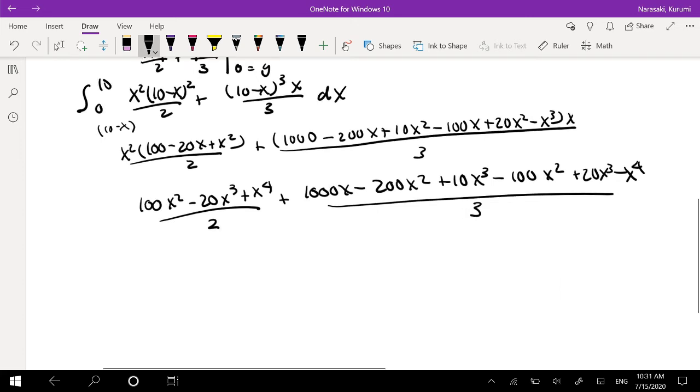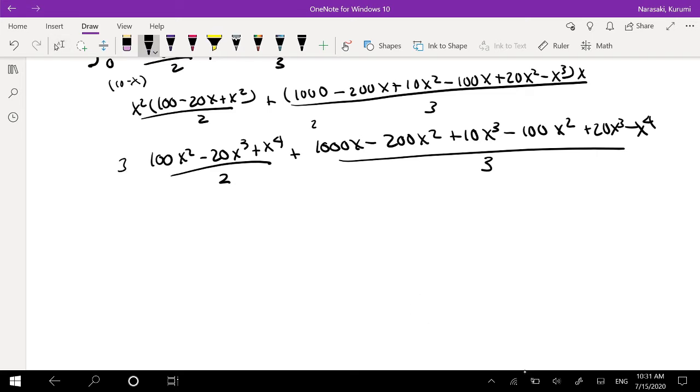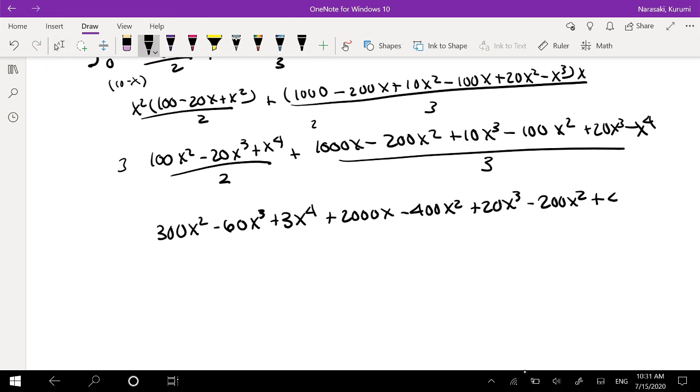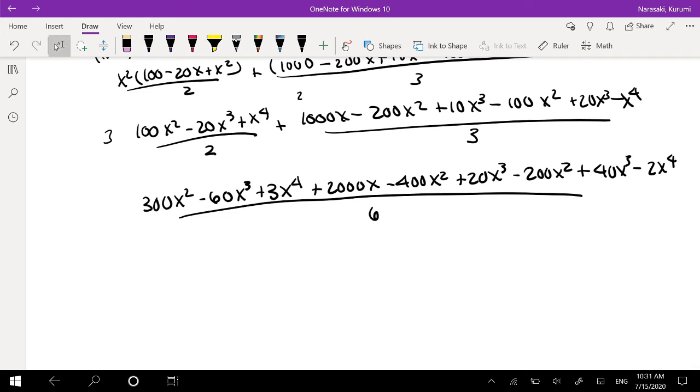Okay, so I'm going to multiply this side by 3 and multiply this side by 2. Okay, so that's going to be equal to 300X squared minus 60X cubed plus 30X to the fourth plus 2000X minus 400X squared plus 20X cubed minus 200X squared plus 40X cubed minus 2X to the fourth. So, all over 6. Okay dokey, lemon chokey. So, what terms can I cancel out? I'm going to start with the fourth, the biggest power.